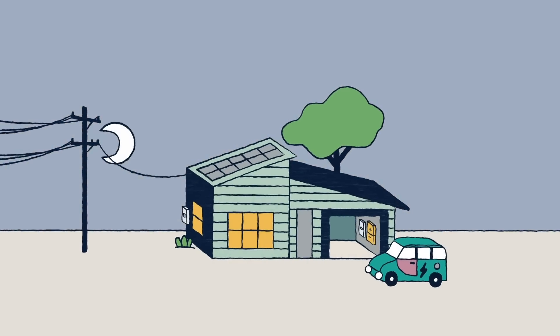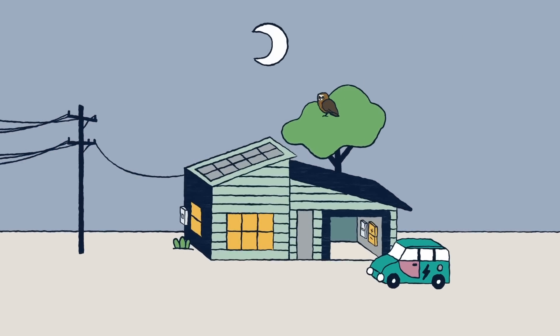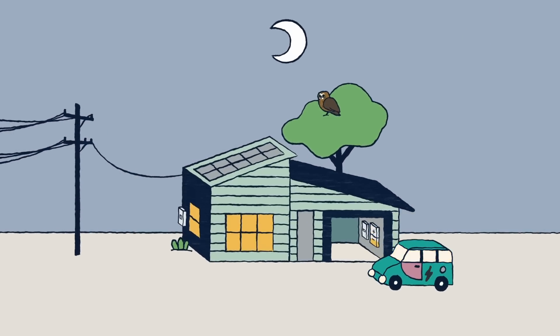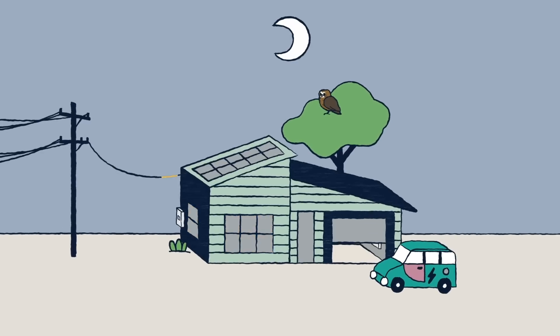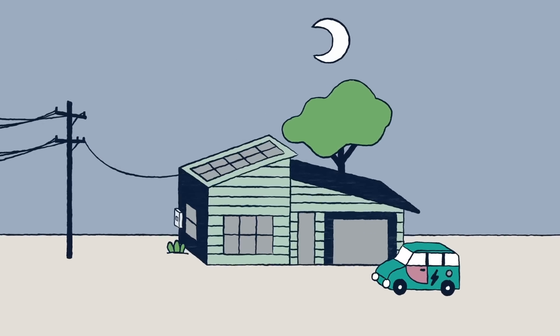When the sun goes down, your panels don't produce energy, but you can still use what's stored in your battery. And if you need to top up, then electricity still flows from the grid.